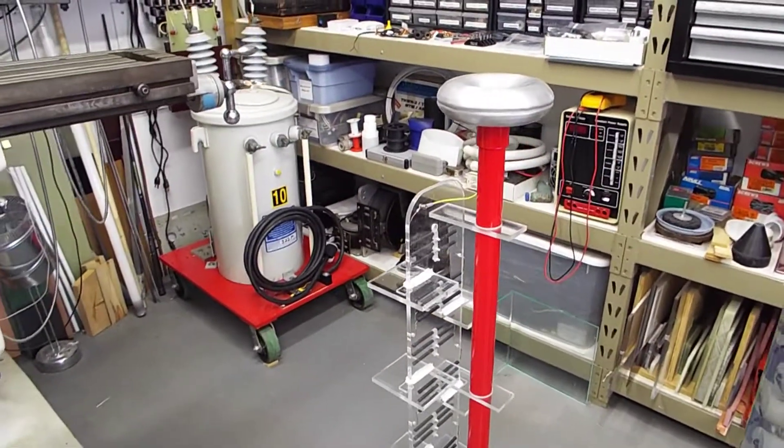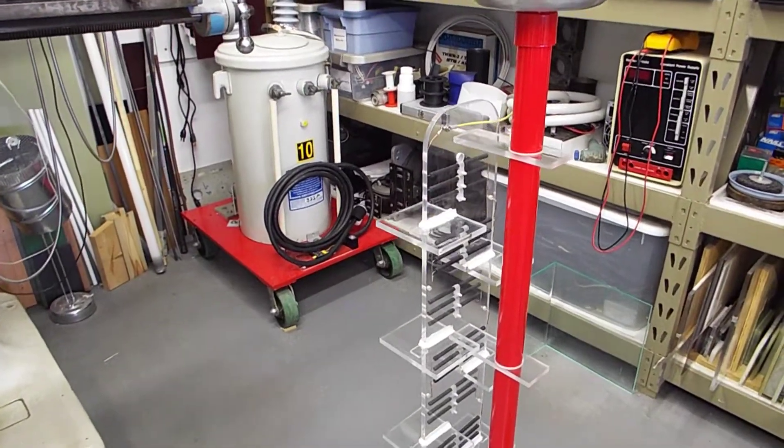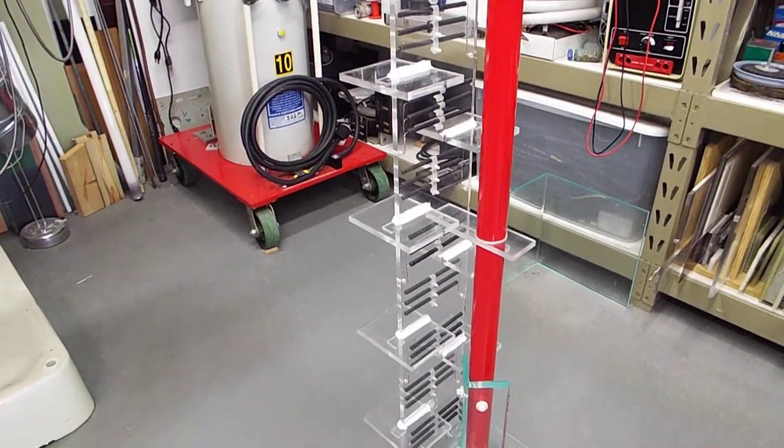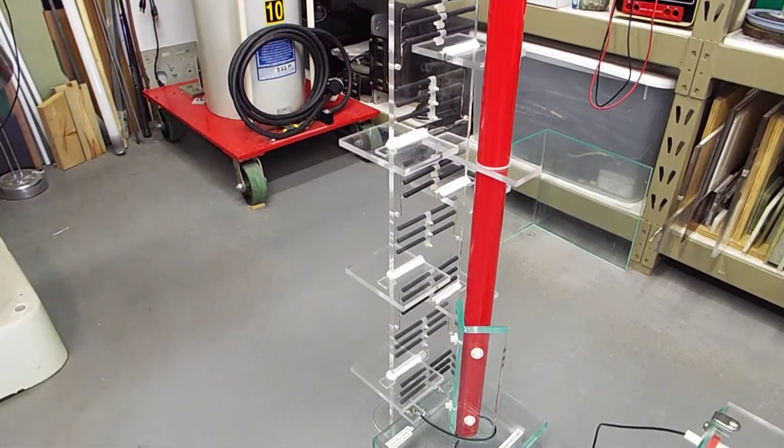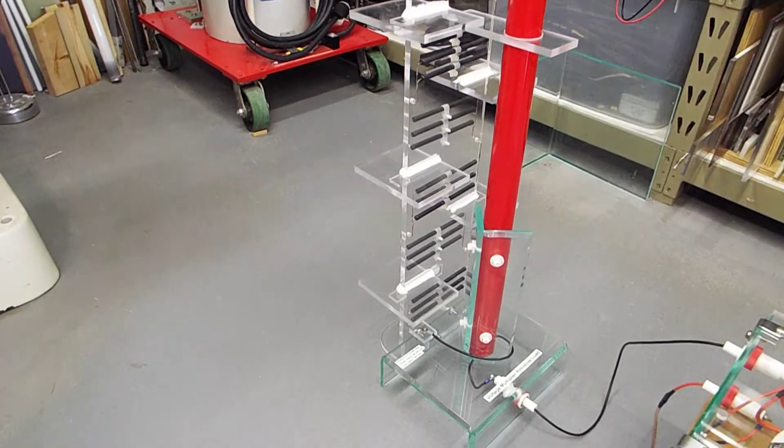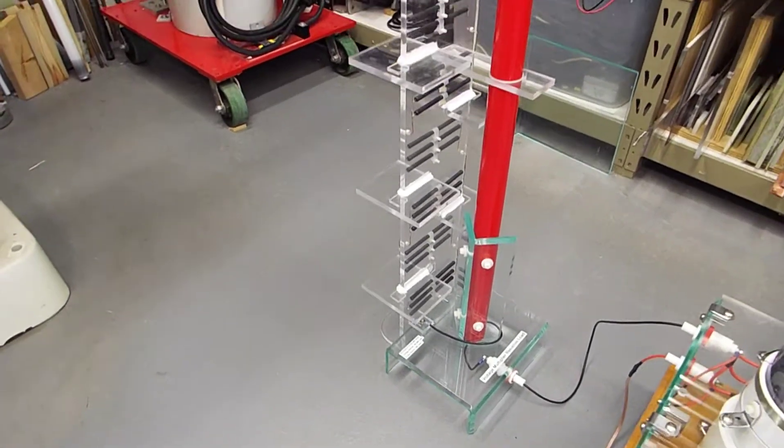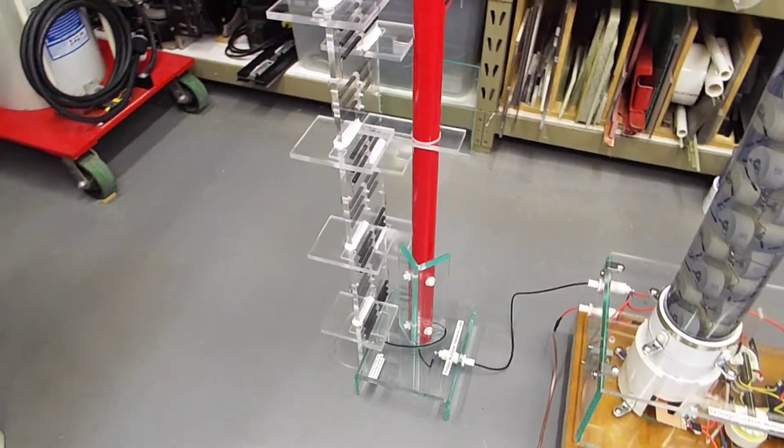And it consists of 24 high voltage, high power resistors. You can see them as the black objects there as I'm panning down here. You have toroids on top.